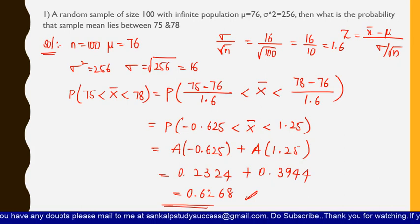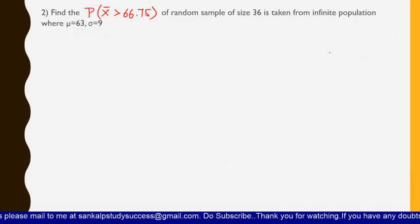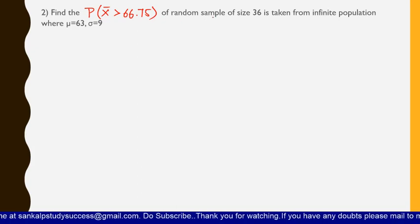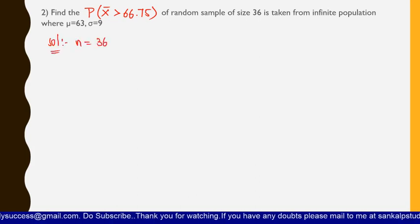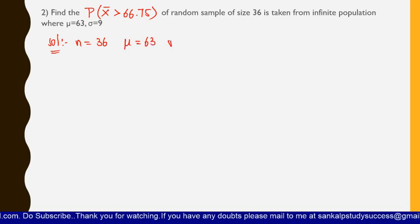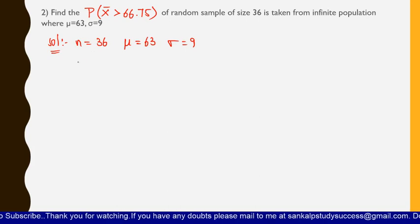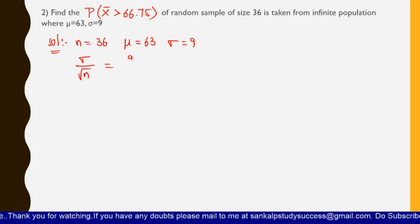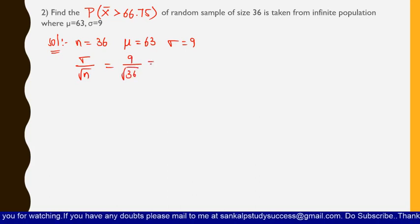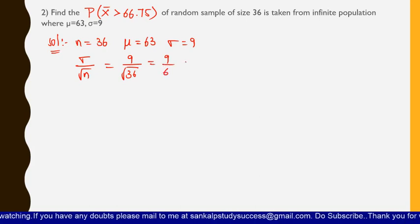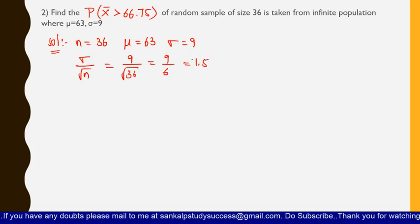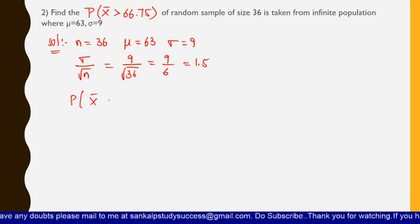Now let us see the second problem. Find P(x̄ > 66.75) for a random sample of size n = 36 taken from an infinite population with μ = 63 and σ = 9. First, σ/√n = 9/√36 = 9/6 = 1.5.